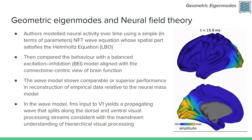As part of their work on geometric eigenmodes, the authors modeled neural activity using a neural field theory wave equation whose spatial component satisfied the Helmholtz equation, equivalent to the Laplace-Beltrami operator from which the geometric eigenmodes were derived. They compared the neural activity generated by this wave model with a balanced excitation-inhibition model aligned to the connectome-centric view, and showed that the wave model achieved comparable or superior performance in reconstructing empirical data. Strikingly, when the wave model was given a one-millisecond input to the primary visual area of the cerebral cortex, it yielded a propagating wave that splits along the dorsal and ventral visual processing streams, consistent with the mainstream understanding of hierarchical visual processing, while having no knowledge of this arrangement.